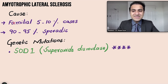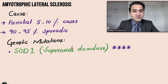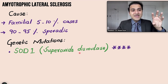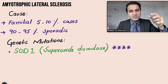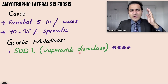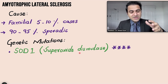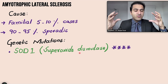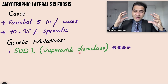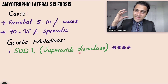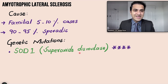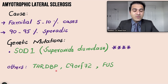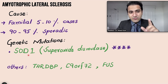If a patient has familial disease, certain genetic mutations are involved. The most important is the SOD1 mutation — superoxide dismutase mutation. Superoxide dismutase is an enzyme that neutralizes superoxide free radicals formed from oxygen. When there is a mutation in superoxide dismutase, it cannot neutralize those free radicals, and those free radicals damage the upper and lower motor neurons. The most important mutation to remember for your exams is SOD1.